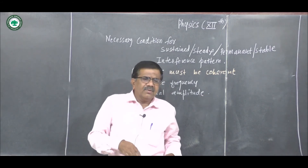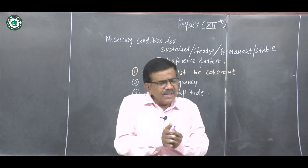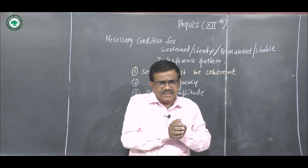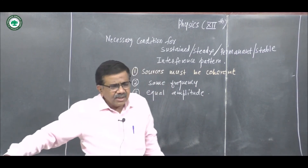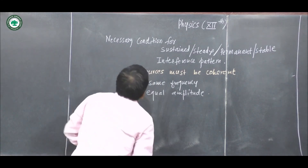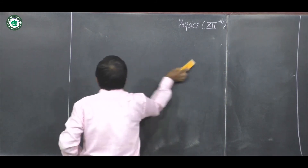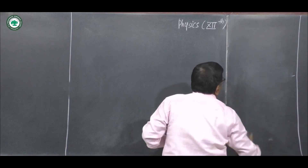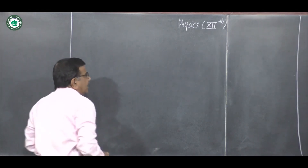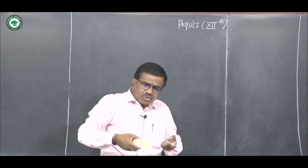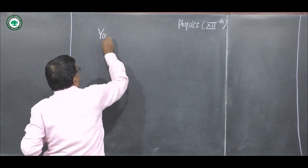We will look at one experiment to study the interference of light, with different numericals based on this experiment — both theory and numerical problems. That experiment is Young's double slit experiment. By studying this experiment carefully, we can solve theoretical multiple choice questions as well as numericals.